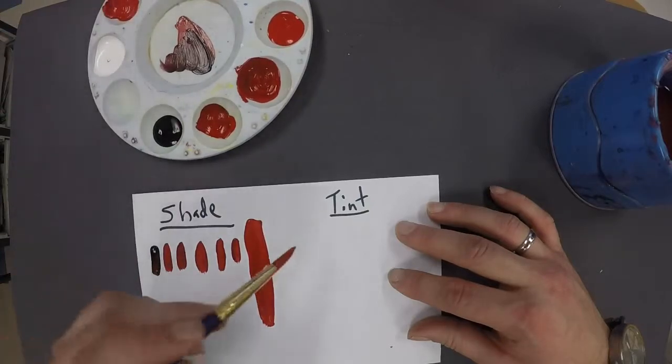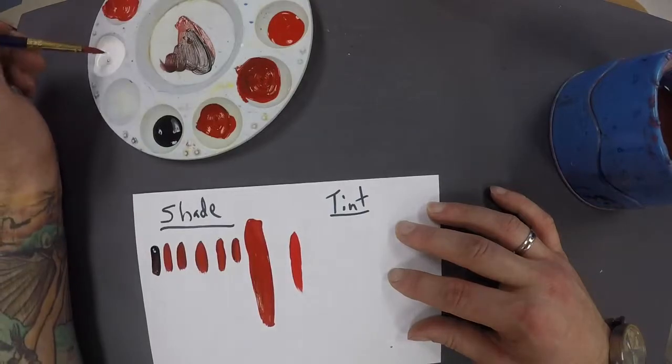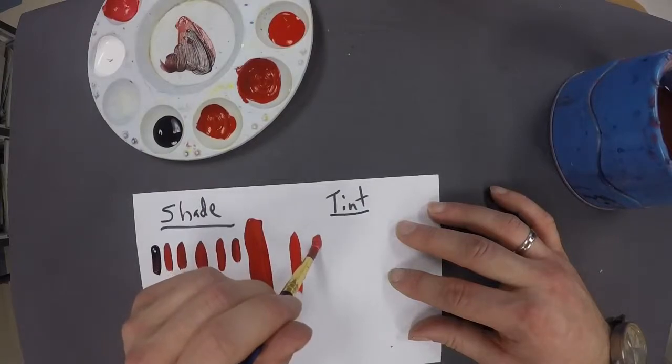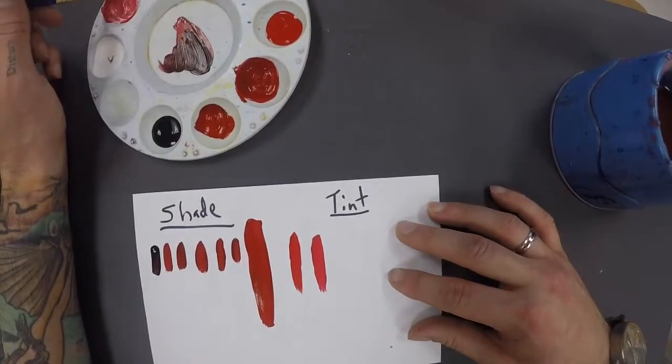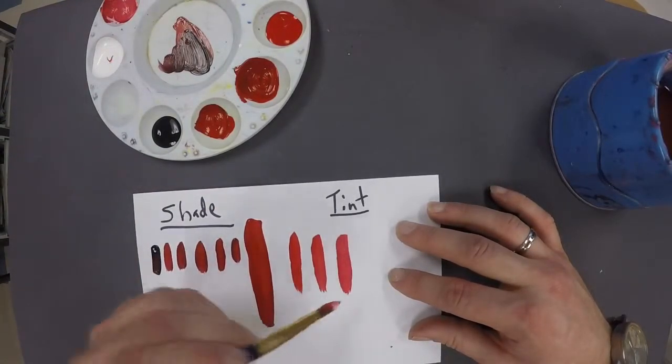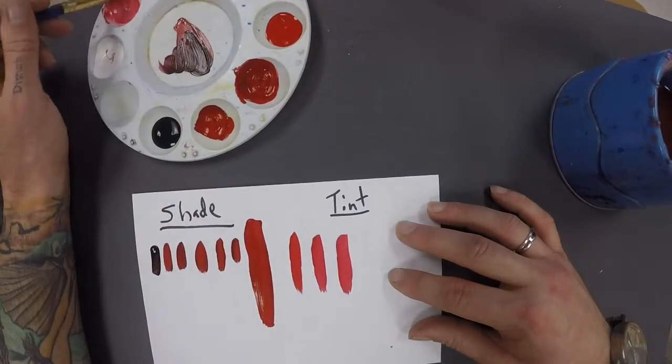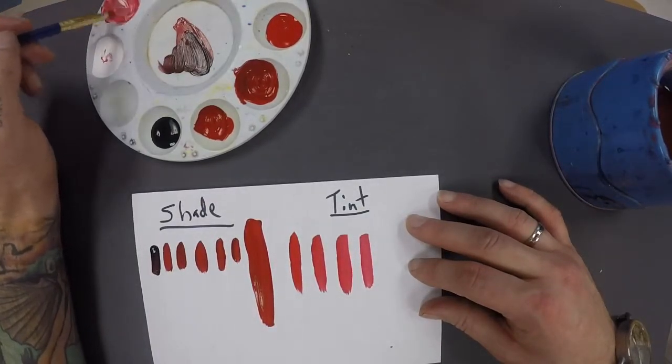We don't want to go overboard and try to overload it. So there's a very tiny amount of white, slightly larger amount, small amounts of the color at a time. There's a little bit more.